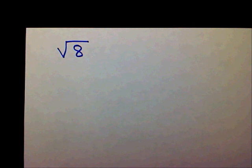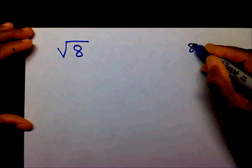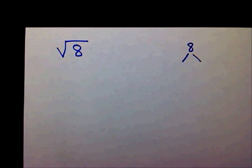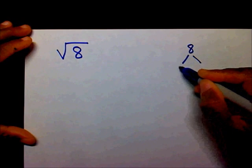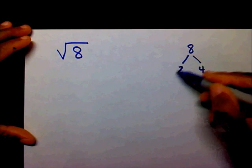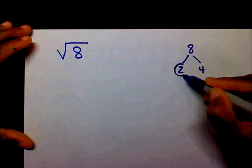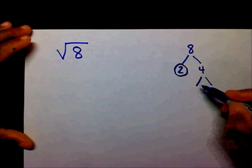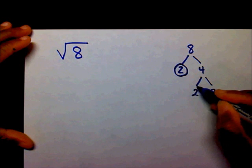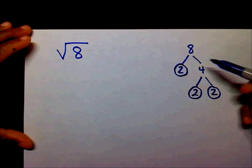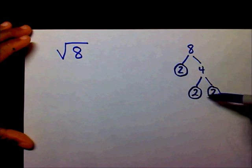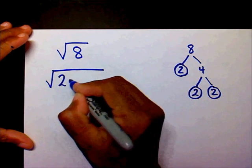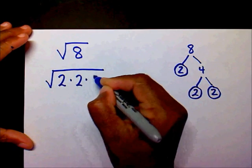Let's find the prime factorization of 8 by breaking it down into prime factors. Two factors of 8 are 2 and 4. 2 is a prime number, so I'll circle that. 4 is a composite number, so I can break 4 down into 2 and 2. So I broke 8 down into 2, 2, and 2. I'm going to rewrite under the radical: 2 times 2 times 2.